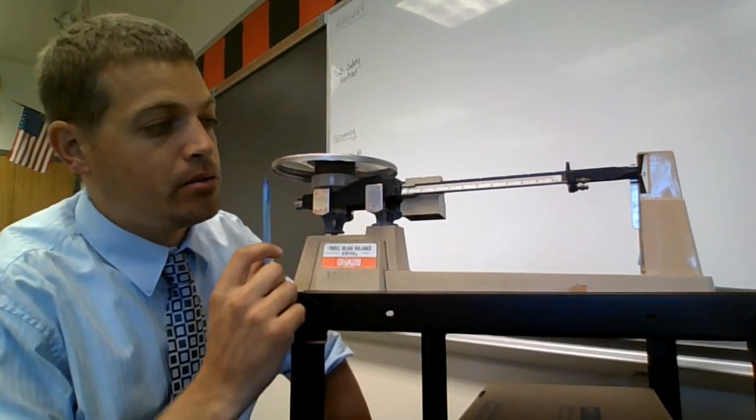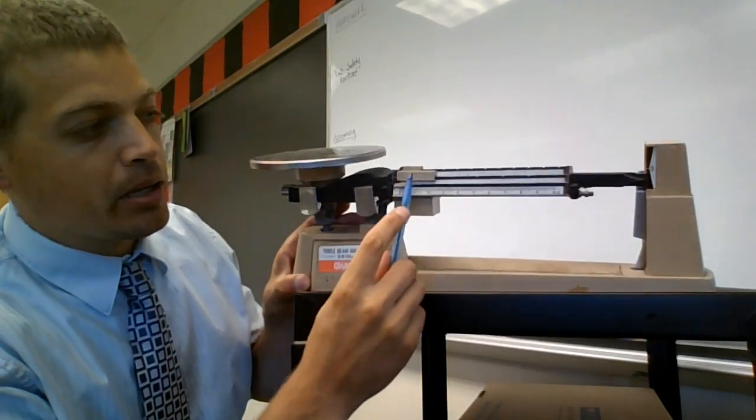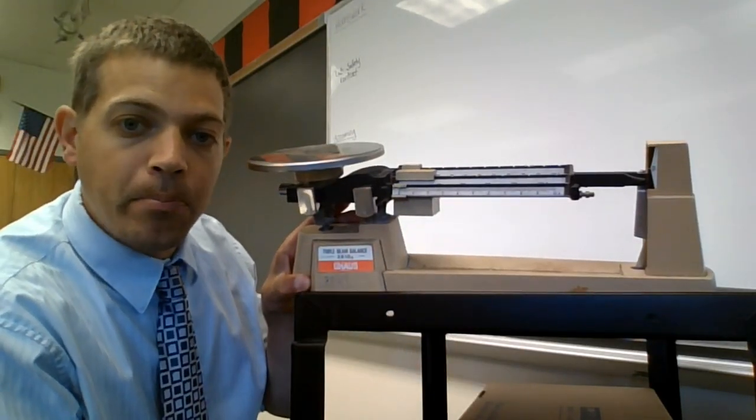We have our pan or tray. That's where we place our object to be weighed. We have our beams. There are three of them, henceforth the name triple beam balance.